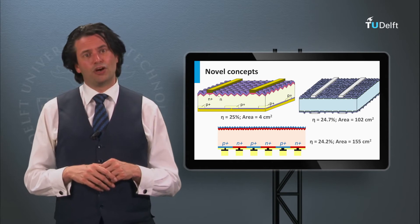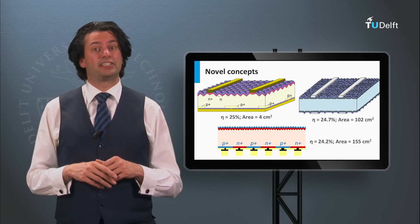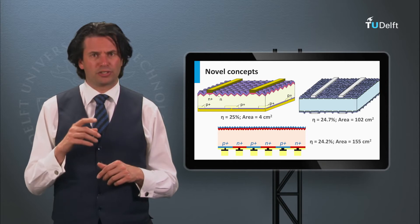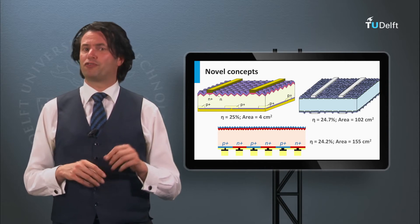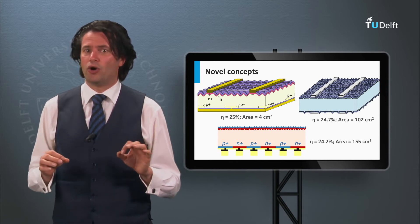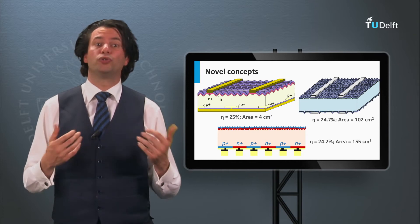Finally, for the crystalline silicon-based heterojunction solar cell, Panasonic achieved an efficiency of 24.7 percent on a wafer size of 102 square centimeters.